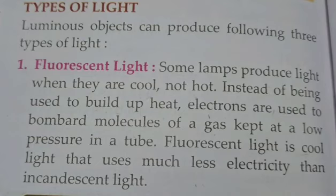Luminous objects can produce the following three types of light. The first one is fluorescent light. Some lamps produce light when they are cool, not hot.